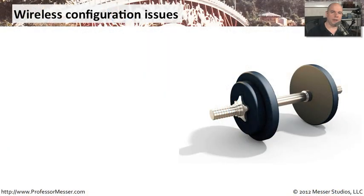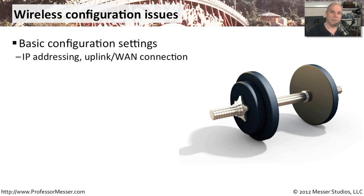When we're working with configuring wireless access points, there are a number of different configuration options. When we have problems, maybe due to some of those configurations, some of those may be very basic options — things like the IP addressing for the access point itself, or perhaps what it's providing from a DHCP perspective. Maybe there's a WAN connection IP address we want to provide. We have to make sure we have exactly the right subnet settings, exactly the right subnet mask, configured for both the wireless clients and the upstream connection to the rest of the network.